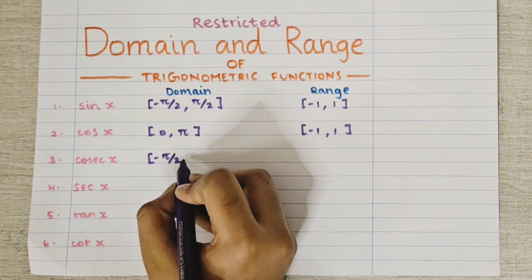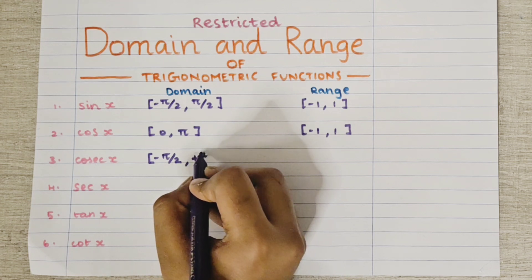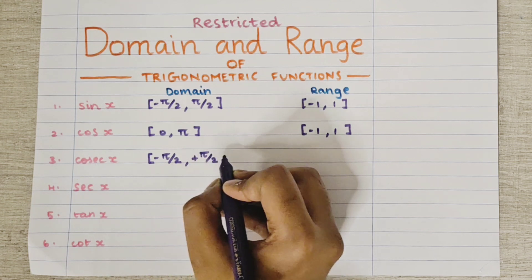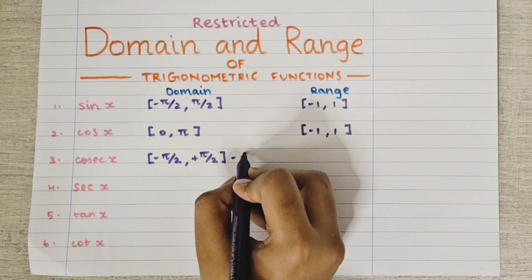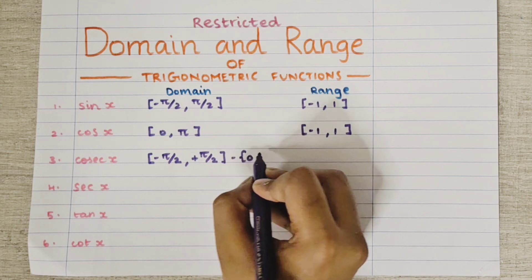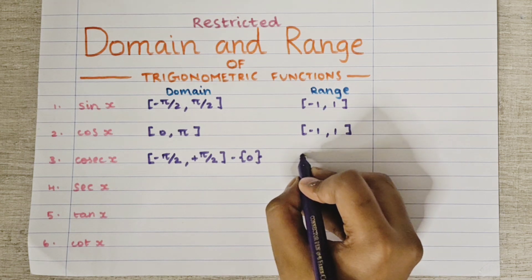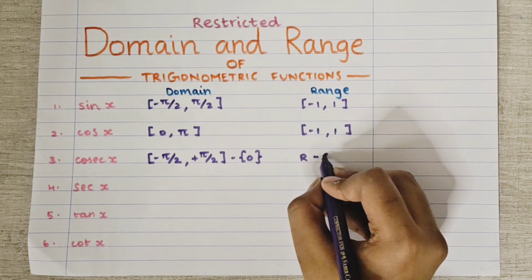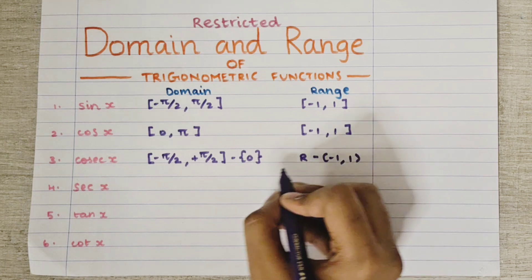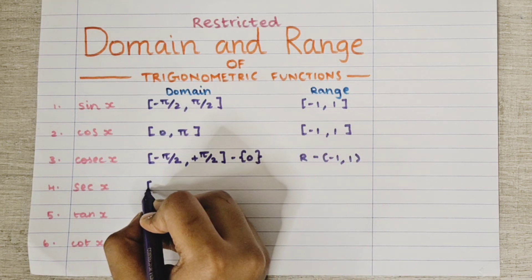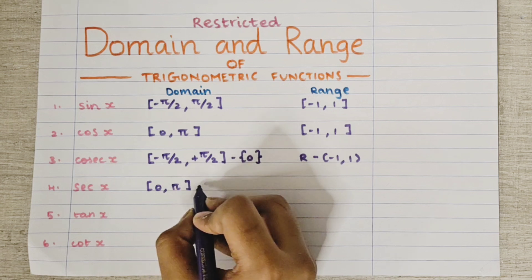For the third function, cosecant x, the domain is the closed interval [-π/2, π/2] minus {0}, and the range of cosecant x is the real numbers minus the open interval (-1, 1).